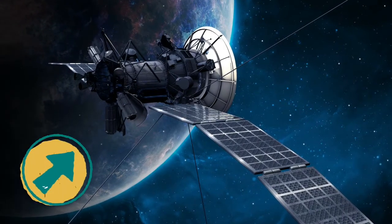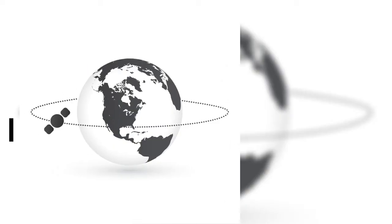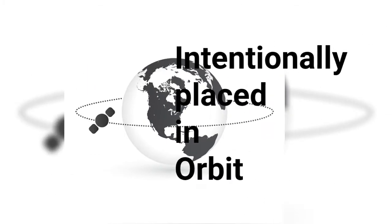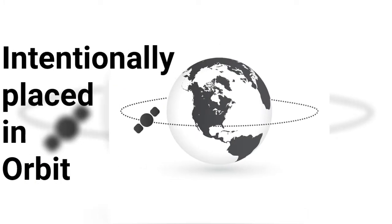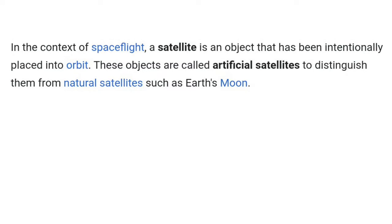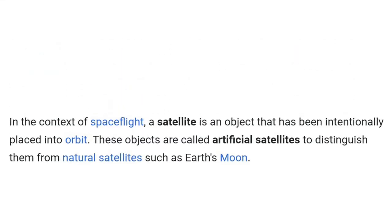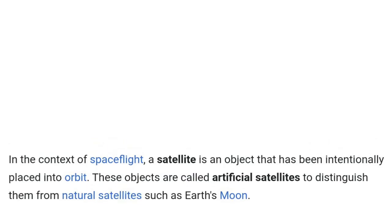What is an artificial satellite? Let's answer this question. Artificial satellites are intentionally placed in orbit. In the context of spaceflight, a satellite is an object that has been intentionally placed into orbit. These objects are called artificial satellites to distinguish them from natural satellites such as Earth's moon.